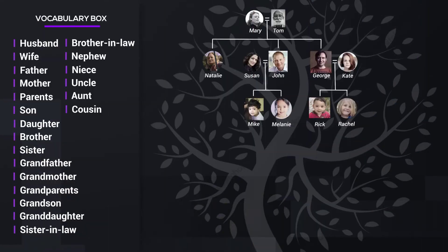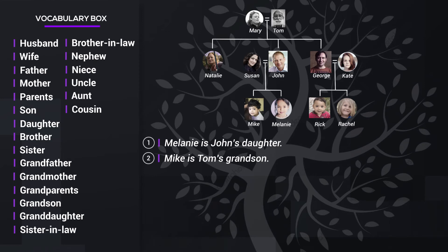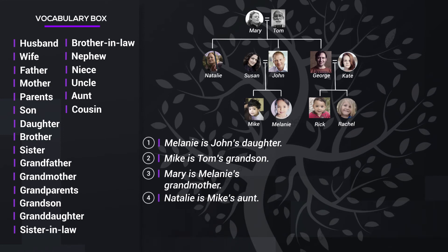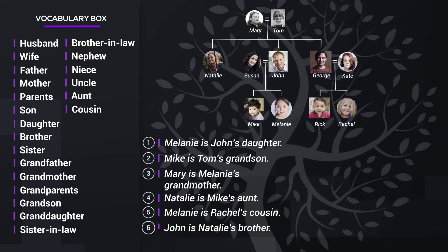Okay, now let's go over the answers. Number one: Melanie is John's daughter. Number two: Mike is Tom's grandson. Number three: Mary is Melanie's grandmother. Number four: Natalie is Mike's aunt. Number five: Melanie is Rachel's cousin. Number six: John is Natalie's brother.